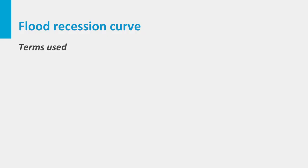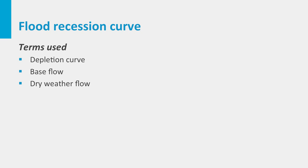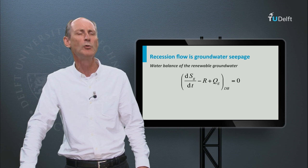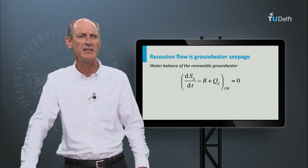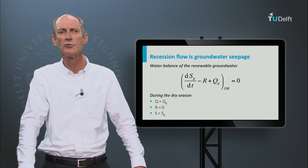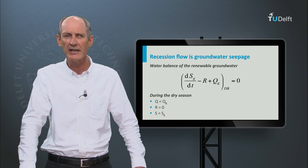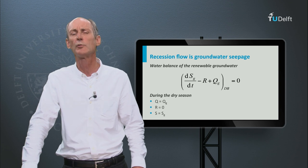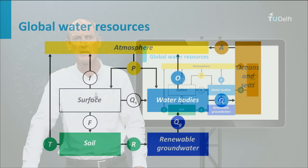Maybe the most predictable part of a hydrograph is the recession curve, which represents the slow groundwater depletion during the base flow of a river. The recession flow obeys the water balance of the renewable deep blue groundwater. In the dry season the deep blue groundwater has no recharge and in the river there is no surface runoff. So the catchment discharge consists of groundwater and the active storage is the groundwater storage.